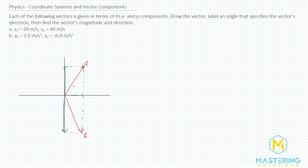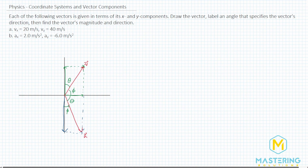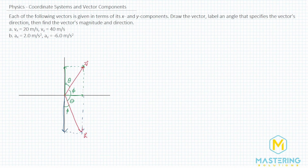We have both of the resultant vectors drawn now. They ask us to label an angle to specify the vector's direction, and you can think of it in two ways. For part a, we could look at this angle here and call it theta, or we could look at this one and call it phi. Same thing for b — we could call this one theta, or look at this one for phi. Both are fine, as long as you label it correctly — a certain number of degrees from the negative y-axis, below the positive x-axis, above the x-axis, or to the right of the positive y-axis.